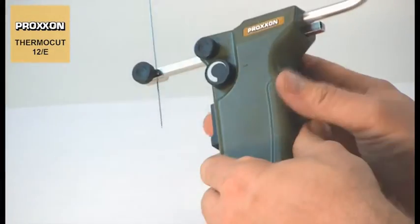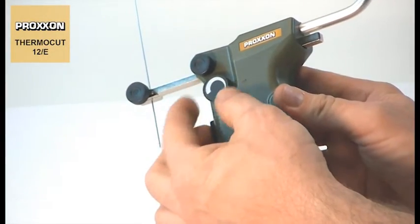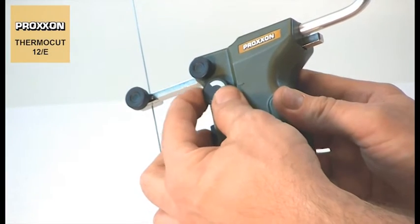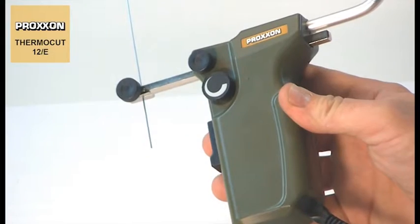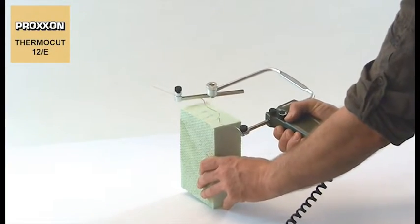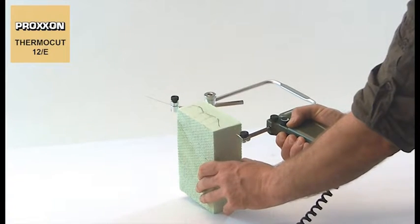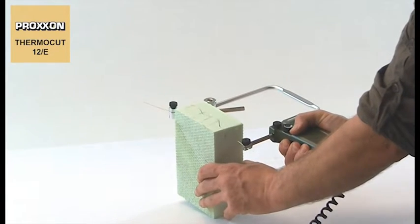To adapt the device optimally to working conditions and materials, the cutting wire's temperature can be adjusted finely and continuously to a maximum value of about 350 degrees Celsius. In accordance with the material's density and strength, this achieves a perfect cutting pattern after a little practice.